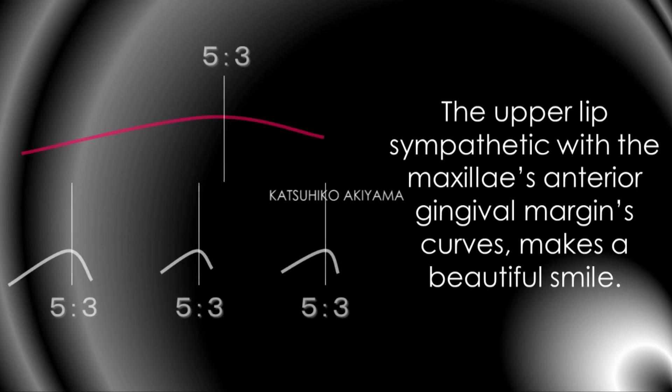When the upper lip is sympathetic with the maxillary anterior gingiva margin curves, it makes a beautiful smile. This ratio is the golden proportion: 5 to 3.